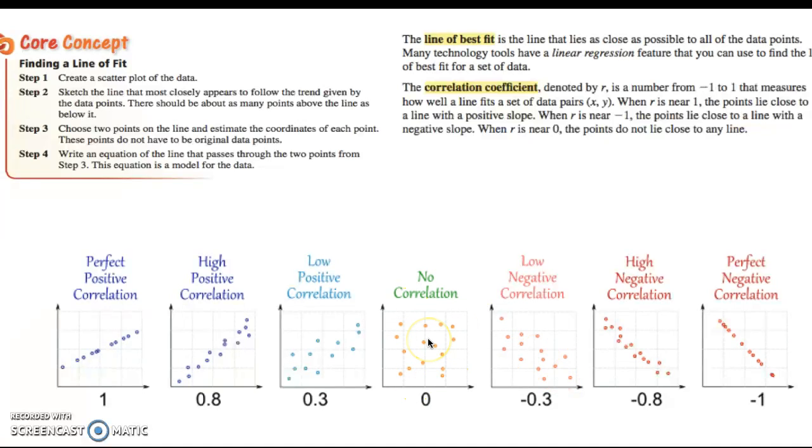And then finally, when your r value is around 0 and your graph appears something like this, so that as you look at it your eyes are not drawn in one direction or another, then that is no correlation.